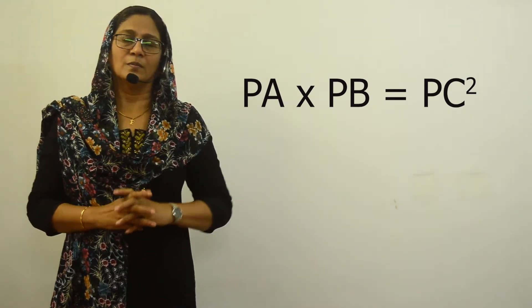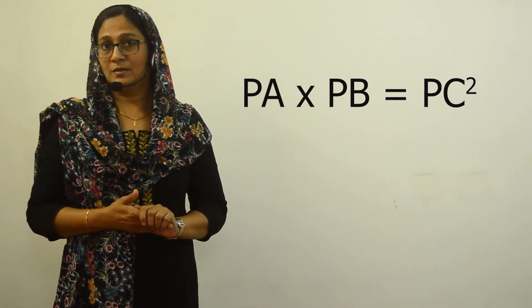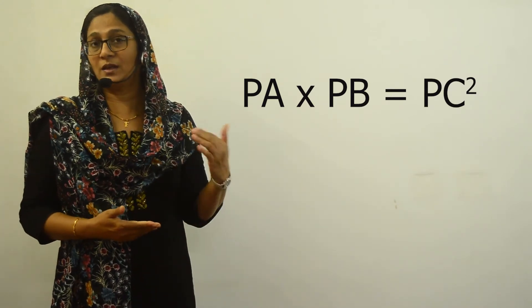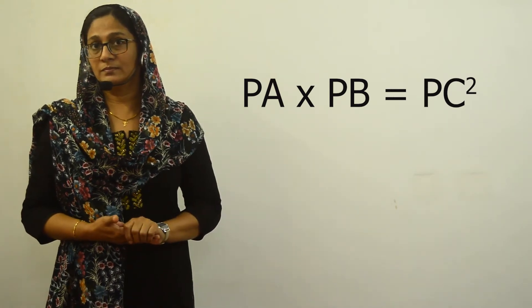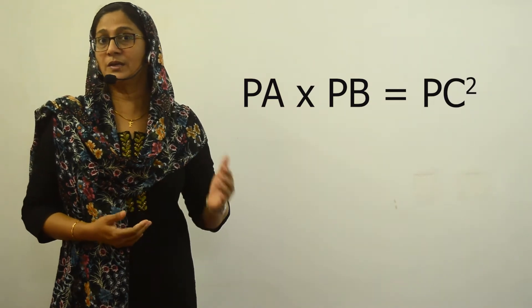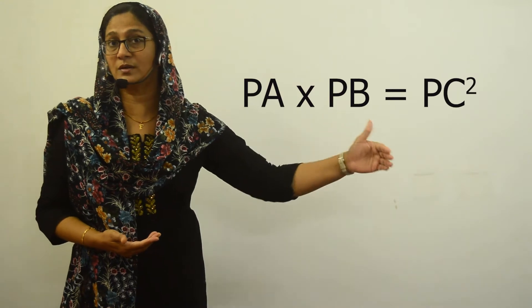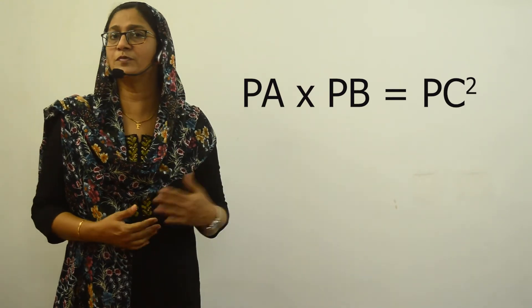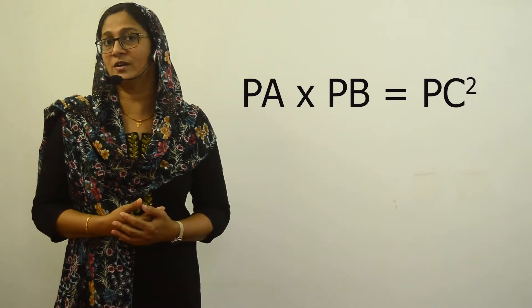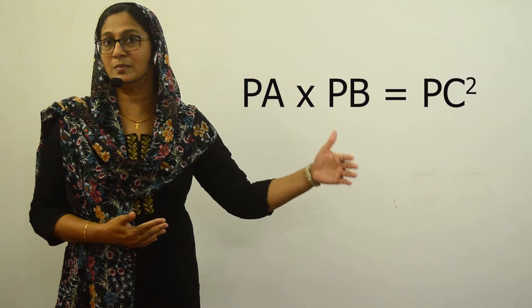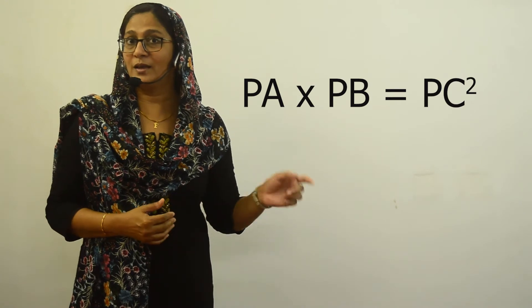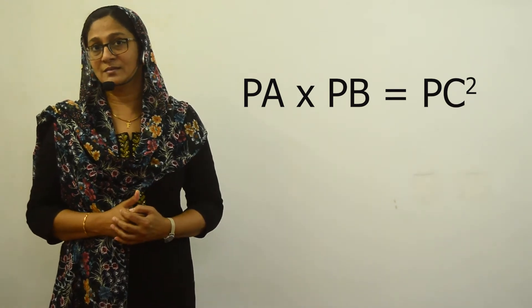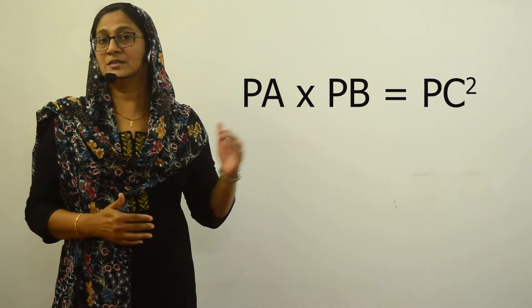We had already seen that PA multiplied by PB also means it is the area of a rectangle with sides PA and PB. So what does PA multiplied by PB equals PC squared mean? PC squared can also be represented as PC multiplied by PC, which is the area of a square with side PC.